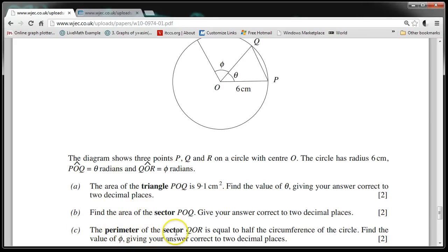The perimeter of the sector QOR is equal to half the circumference of the circle. Find the value of phi, giving your answer correct to two decimal places.